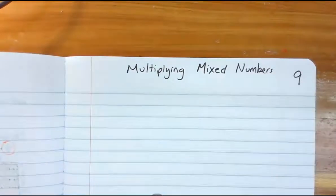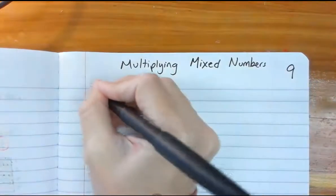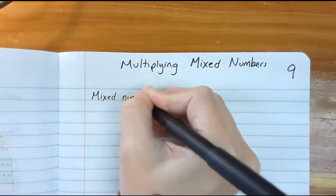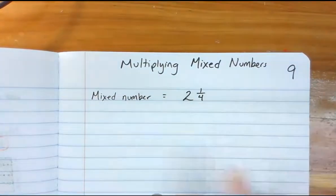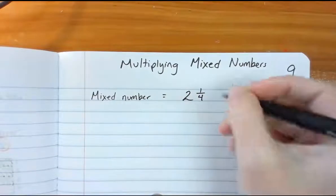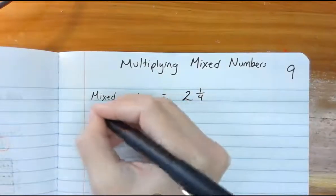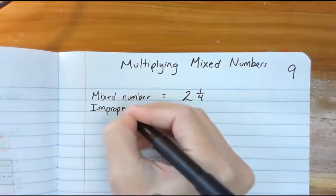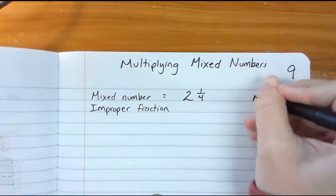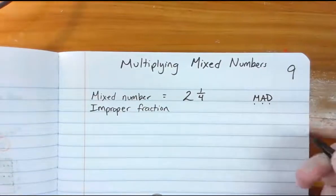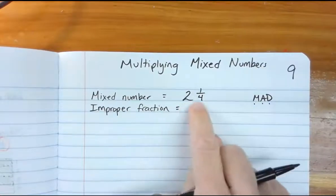This should be on page nine, so we're multiplying mixed numbers today. If you remember, a mixed number is any whole number and fraction combination. An example would be two and one-fourth. Remember we can change a mixed number into an improper fraction — we did this a couple weeks ago using what we call the MAD method: Multiply, Add, then Denominator.